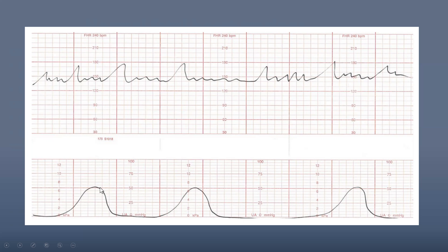A late decel would occur after you hit the peak of the contraction and then the decel starts — that's something to watch out for because it would be a Category 3 tracing. A variable decel looks different because it's sharp, like a V-shape. If you think of the V in variable, it looks more V-shaped because it happens more rapidly than an early or late decel, which looks more like a smooth contraction hump. Variables happen at a more accelerated pace.